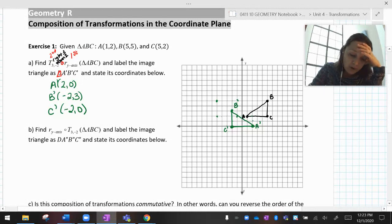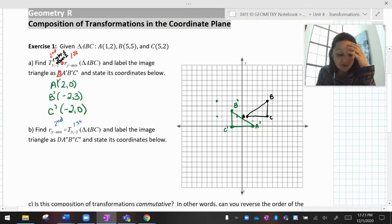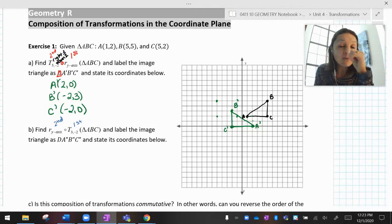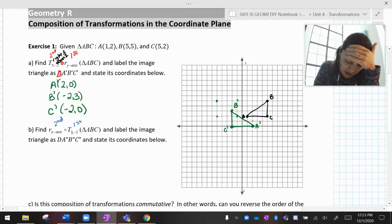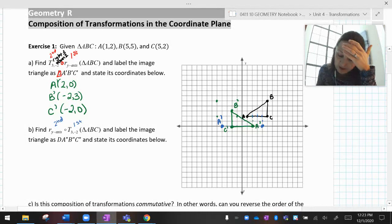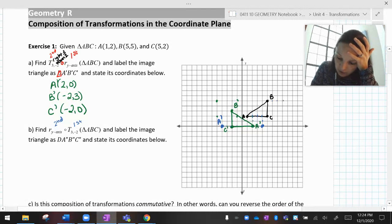Then it says, what if instead of doing it that way, you did the translation first and the reflection second? So I'm still going to do the same two transformations, but I'm going to do them in a different order. So if first I slide it to the right three down two, and then I flip it. So right three, I'm going to start at A, down two. And then flip that over the y-axis.